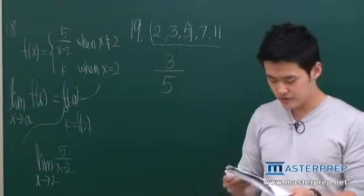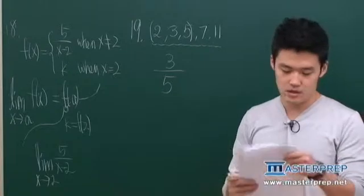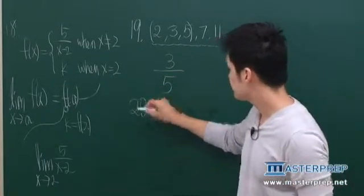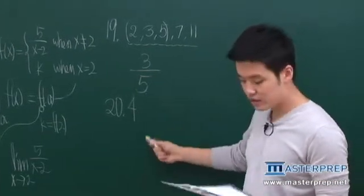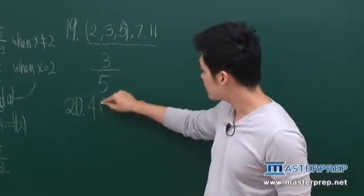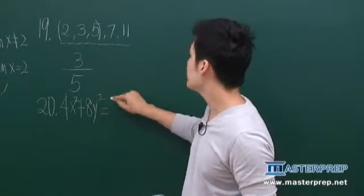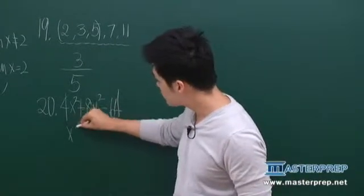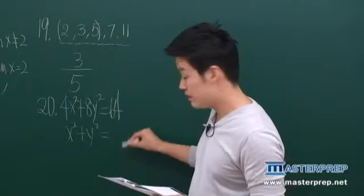Let's get into number 20. We have one of those ellipses: 4x squared plus 8y squared equals 64, and we have a circle which is x squared plus y squared equals 9.